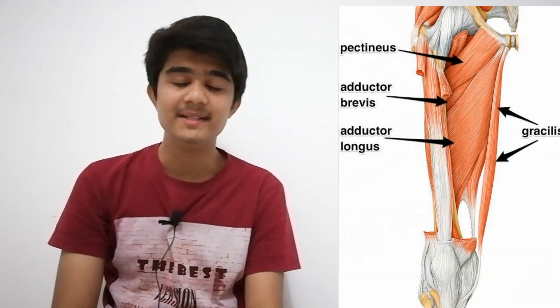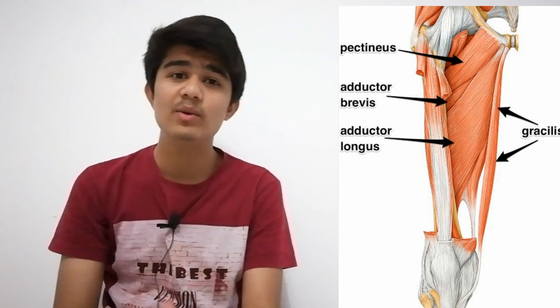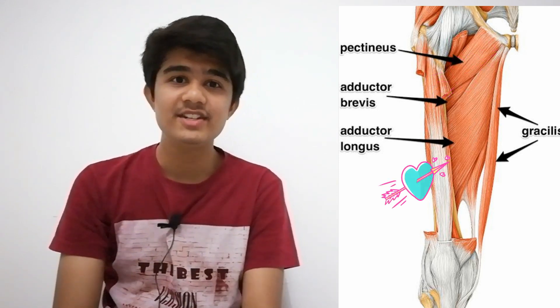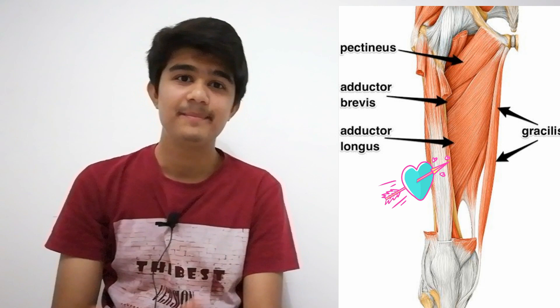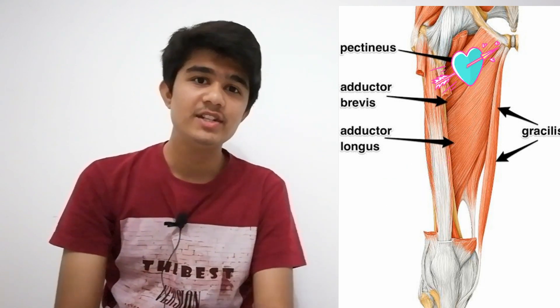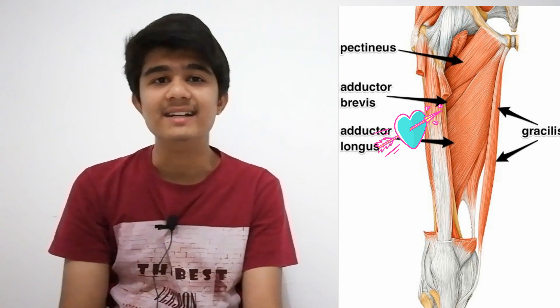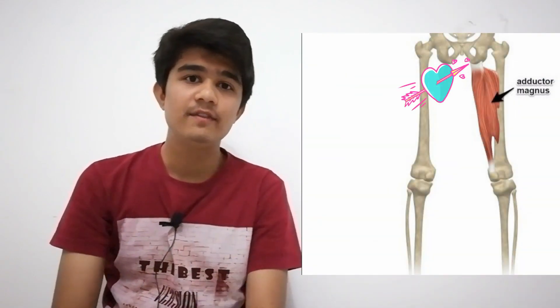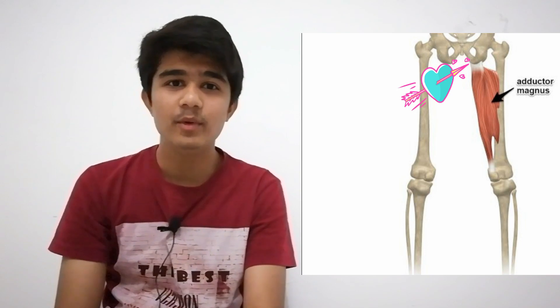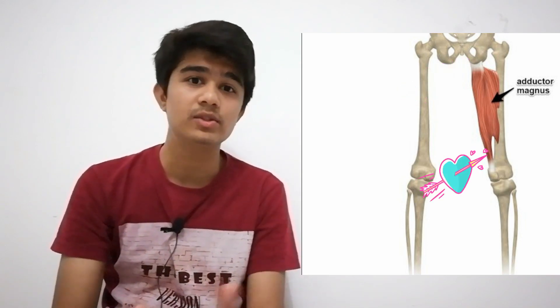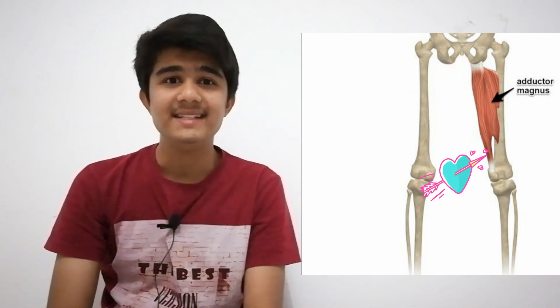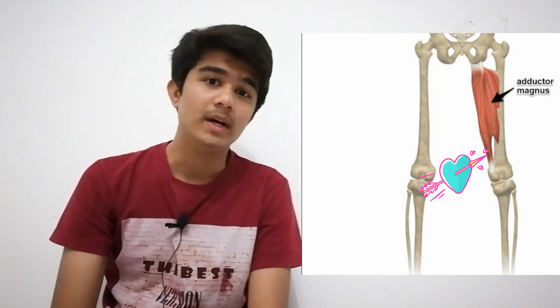Now come to the medial compartment of the thigh. Adductor longus originates from the pubic bone and inserts on the linea aspera. Adductor brevis also originates from the pubic bone and inserts on the linea aspera. Adductor magnus originates from the ischium and pubic bone, and has insertion on two sides: one is the linea aspera and another is the adductor tubercle. Don't forget to remember the adductor hiatus.